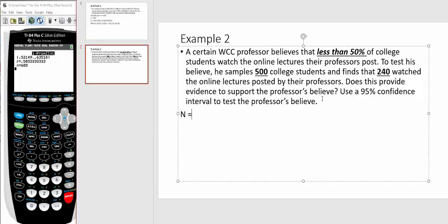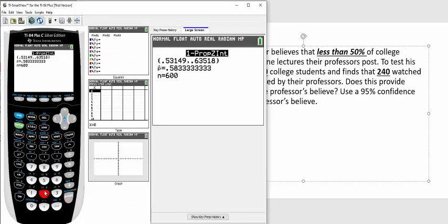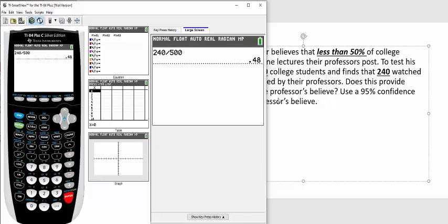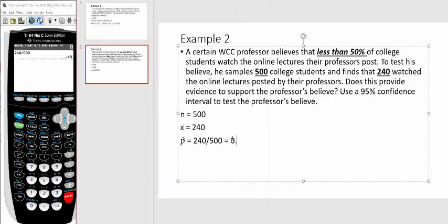Right off the bat, the sample size is 500. X, the number of students who are watching the online lectures, is 240. So my p hat equals 240 divided by 500, which is 0.48. Based on this sample, 48% of college students are watching the online lectures that their professor posts. That's less than 50%, so obviously the professor is correct. But that's not exactly how data and statistics work.